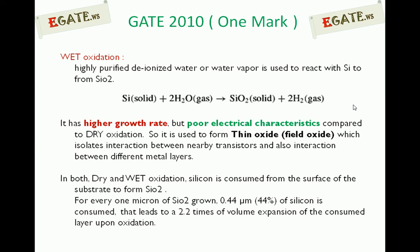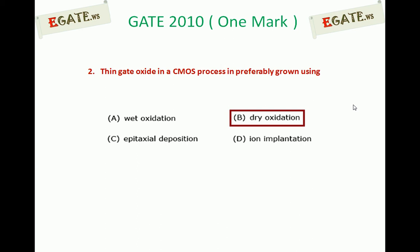In both dry and wet oxidation, silicon is consumed from the surface of the substrate to form silicon dioxide. For every 1 micron of silicon dioxide grown, 44% of silicon is consumed, leading to a 2.2 times volume expansion of the consumed layer upon oxidation. Therefore, the correct answer is that thin gate oxide in a CMOS process is preferably grown using dry oxidation, because of its excellent electrical characteristics.